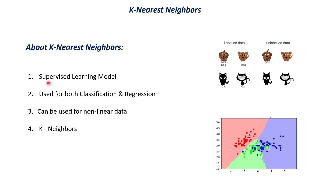A k-nearest neighbor model is a supervised machine learning model where we use only labeled data, and KNN can be used for both classification as well as regression problems. In classification we try to predict the category of a data point, whereas in regression we try to predict some numerical continuous value. KNN can also be used for both linear data as well as non-linear data, whereas models like linear regression and logistic regression can only be used with linear data.